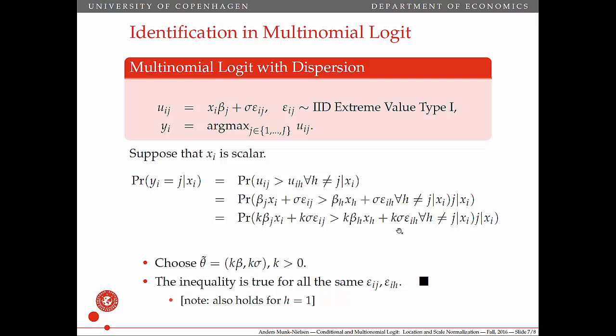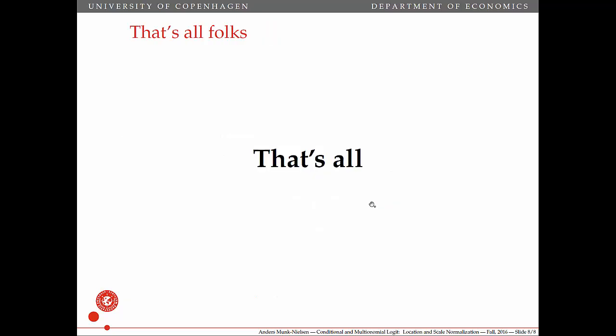And note that even if we were to compare with the alternative H equal to 1, the normalized alternative where the betas are zeros here, then it just says K sigma epsilon_I1. So it still works. We can still multiply by K on all of the betas and still leave beta 1 normalized. And the inequality will still be preserved. So that proves the identification breakdown in these cases.